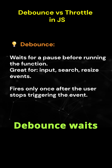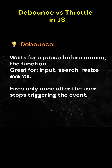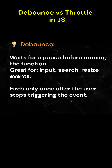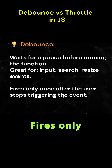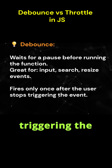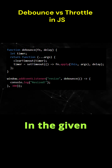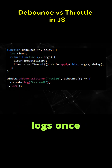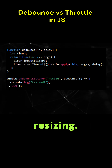Debounce waits for a pause before running the function. Great for input, search, and resize events. It fires only once after the user stops triggering the event. In the given example, we can see it only logs once after the user stops resizing.